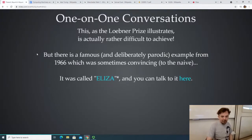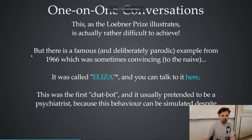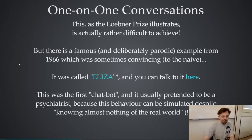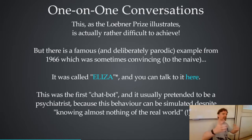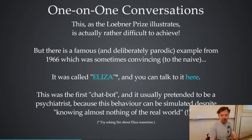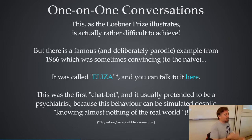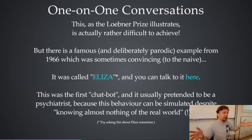So that's Eliza — that's the first one. It pretended to be a psychiatrist because that's a behavior that can be simulated despite knowing almost nothing of the real world — that's what he said in the paper behind it. And Eliza was written in a language called Lisp that you might know — it's what Scheme derives from. Lisp was the original parenthesis-heavy language, invented as a language for doing AI. It was invented by John McCarthy — he wanted a high-level language that would help you solve difficult problems and would be good at manipulating words and text. The atoms in Lisp could be seen as words, and manipulating lists is manipulating sentences. It was intended for doing textual AI.